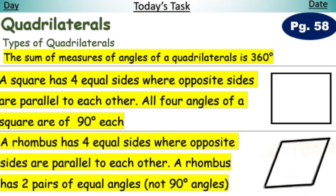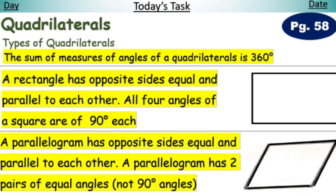A rhombus has four equal sides where opposite sides are parallel to each other. A rhombus has two pairs of equal angles, not 90-degree angles. A rectangle has opposite sides equal and parallel to each other, and all four angles are of 90 degrees.